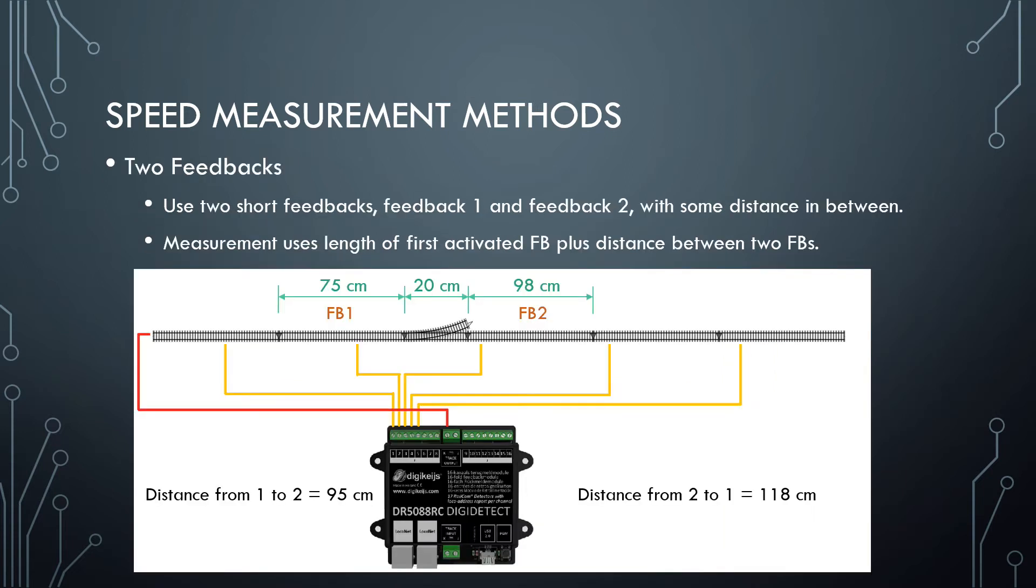The next method is called two feedbacks. It uses two short sections of track with a feedback sensor in each section and a section of unmonitored track in between, such as a turnout as shown here.